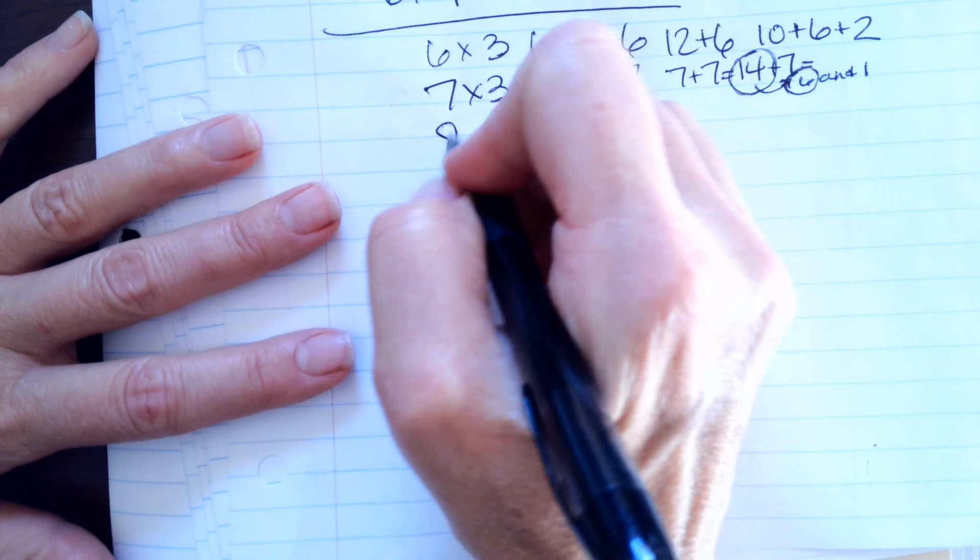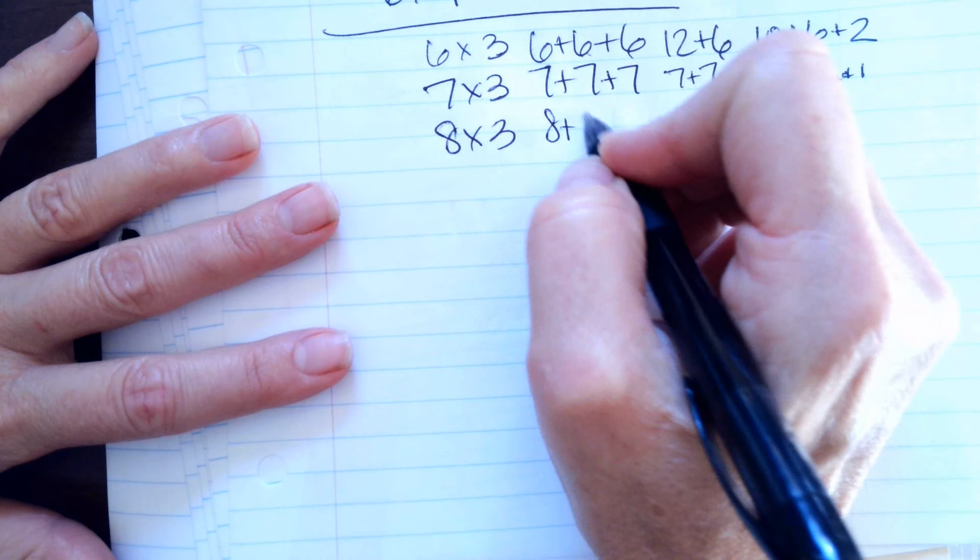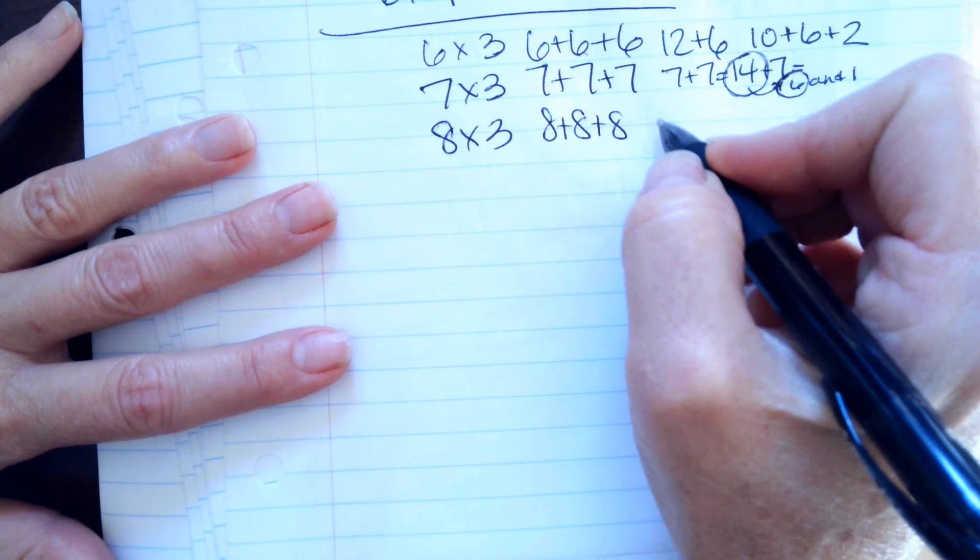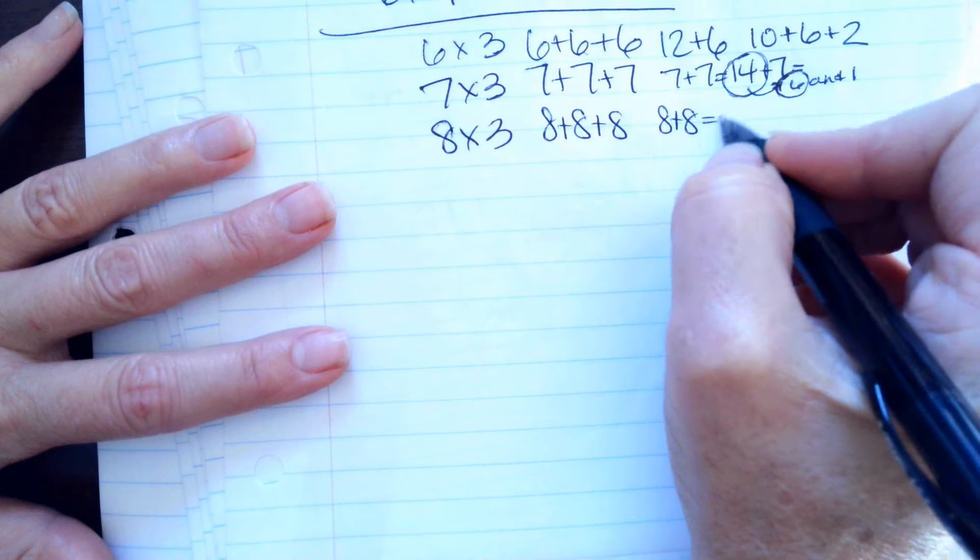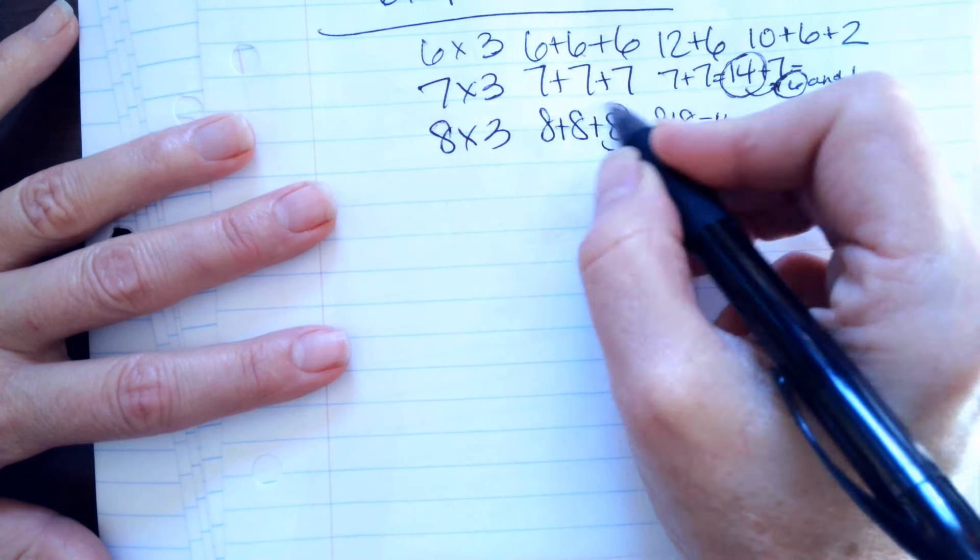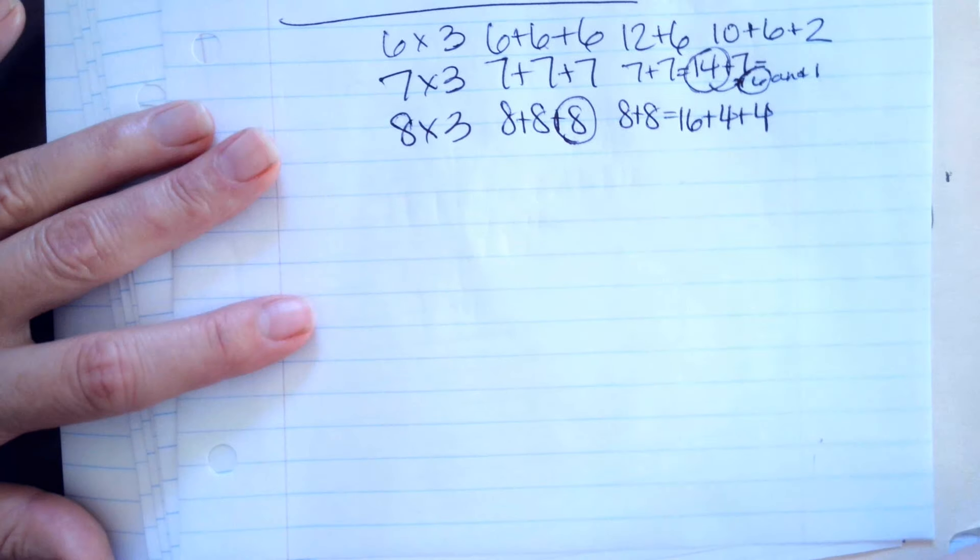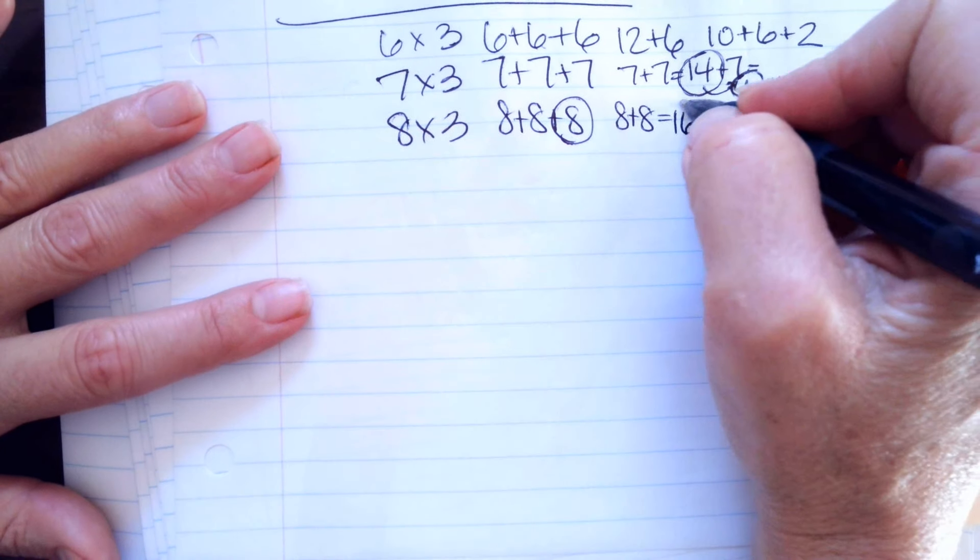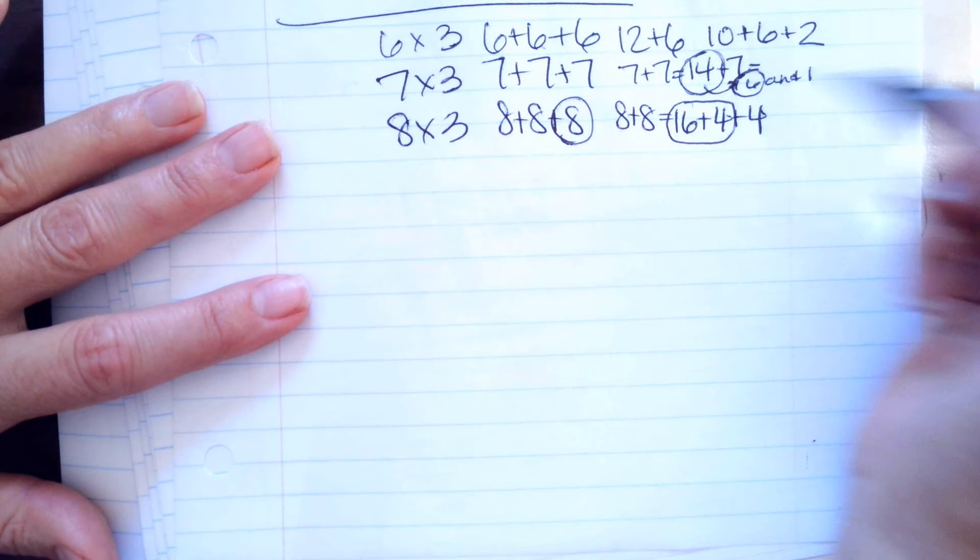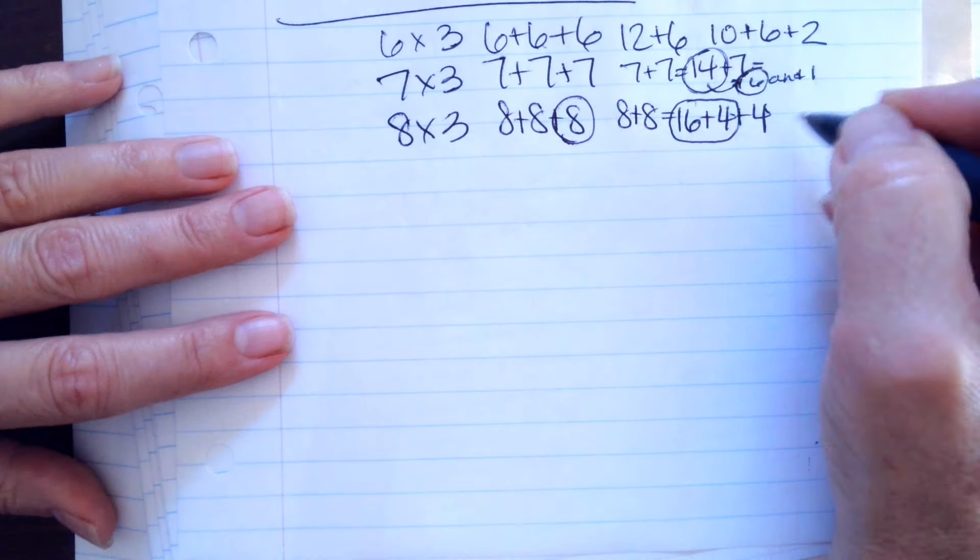8 times 3 we're going to do 8 plus 8 plus 8. 8 plus 8 is 16 and then I'm going to break this 8 into a plus 4 and a plus 4. And the reason why I'm going to do that is 16 plus 4 is 20 plus 4 is 24.